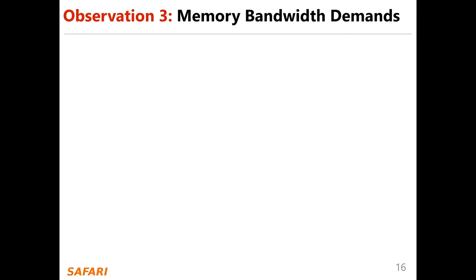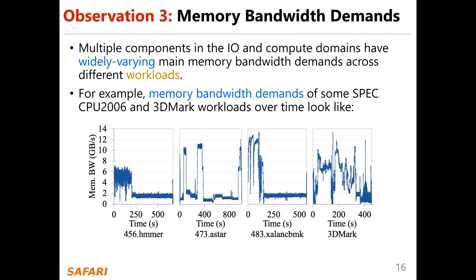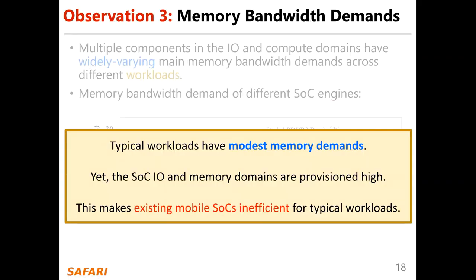Our third observation is about the memory bandwidth demand in mobile SoC. Multiple components in the IO and the compute domain have widely varying memory bandwidth demand across different workloads. For example, memory bandwidth demand for SPEC CPU 2006 and 3DMark workloads over time shows that several intervals have low bandwidth demand, for example below 5 GB per second, under some configurations and workloads. We conclude that typical workloads have modest memory demands, yet the SoC IO and memory domains are provisioned high, making existing mobile SoCs inefficient for typical workloads.